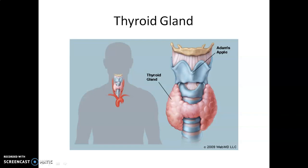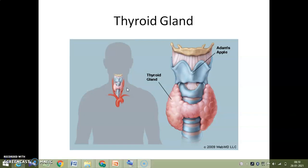Thyroid hormones play an important role in the regulation of basal metabolic rate. These hormones also support the process of red blood cell formation. Thyroid hormones control the metabolism of carbohydrates, proteins, and fats, and also influence the maintenance of water and electrolyte balance.